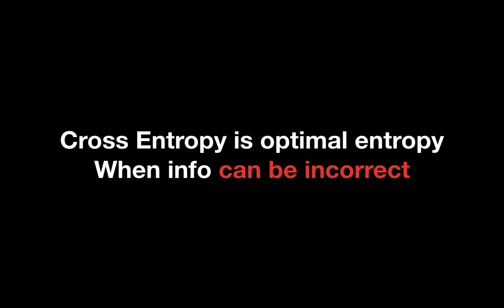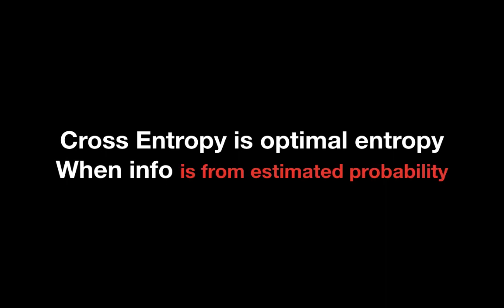Long story short, cross-entropy is optimal entropy when the information can be incorrect. Wait a second, how can the information be incorrect? Well, the information can be incorrect if it's from your estimation, prediction, or inference, just like classification output from your machine learning model. In other words, cross-entropy is optimal entropy when the information is from estimated probability.